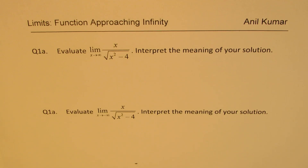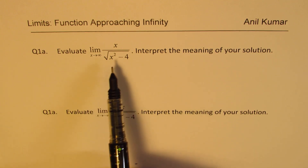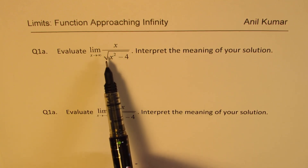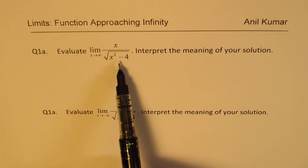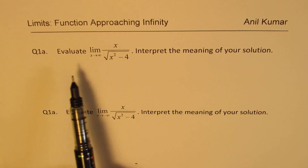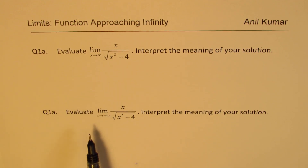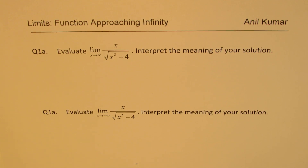I'm Anil Kumar sharing with you a very important question based on limits as the value of x is approaching infinity. Here we have two parts of a question. We need to find the limit of the function x over square root of x squared minus 4 in part A when x approaches infinity, and in part B when x approaches negative infinity.